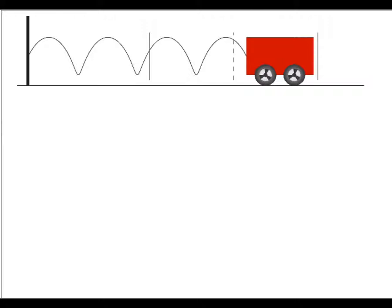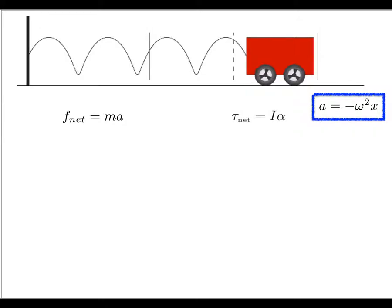Remember that the relationship we're always looking for to prove that something is undergoing simple harmonic motion is something like a equals minus omega squared x. The variables can change but it has to look like that. To begin with, let's take a traditional approach. We know we have linear motion, so let's look at F_net equals ma, and we also have rotational motion in the wheels, so let's look at torque_net equals I alpha.